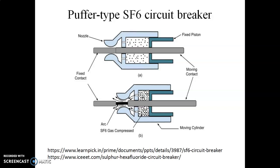See here — single pressure puffer type SF6 circuit breaker construction. A movable cylinder, also known as the puffer cylinder, is placed here. This is the movable part and this is the fixed part. The arrangement of the fixed and moving contacts is shown in the first figure and second figure. The first figure shows the normal condition where the two contacts are in the closed position.